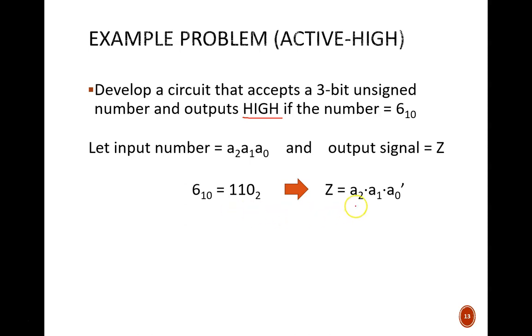This minterm will equal 1 if and only if the three inputs are 1, 1, 0. For any other input combination, it will equal 0. Finally, we build this simple circuit based on the equation using an AND gate. Nothing new here.